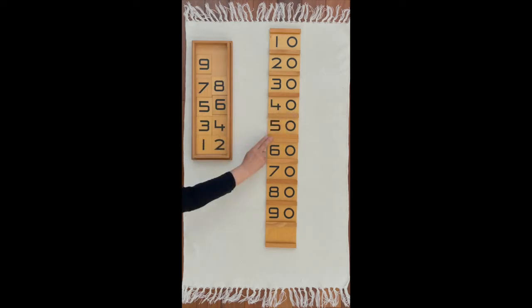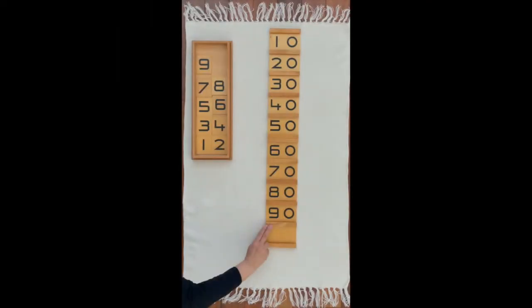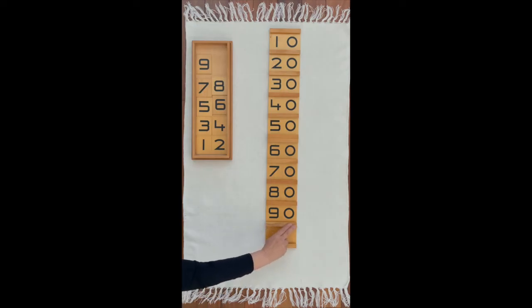Five tens has another name, fifty. This is how you write fifty. Nine tens has another name, ninety. This is how you write ninety.